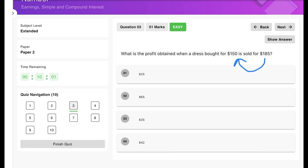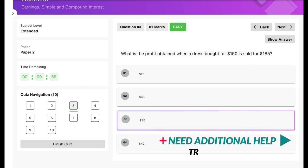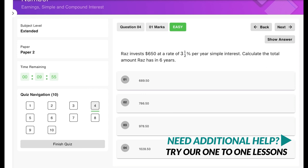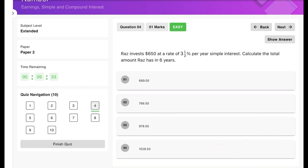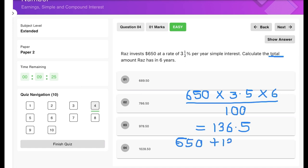And the next one is $650 at a rate of 3.5% simple interest. So simple interest is just a matter of multiplying everything together, so I'm going to multiply 650 times 3.5 times six years, and this I'm going to divide by 100. So this results in $136.5. However, the question is asking for the total amount, so that is going to be $650 plus the $136.5, and this then results in $786.5, which is option number two.